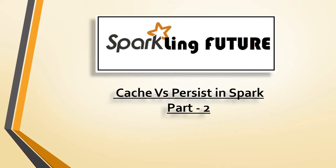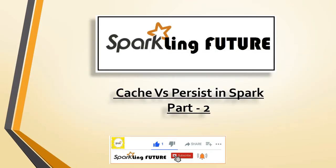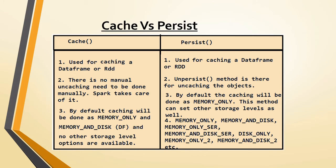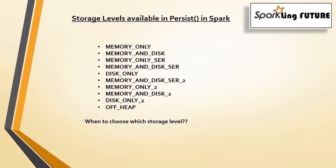Before starting with today's video I request all of you to subscribe to my channel. Please like, share, comment and click on the bell icon for the notifications. In the previous video we discussed about the differences of cache and persist methods and how to use them in Scala code. Today we will see what are the various storage levels available in Spark, what is the meaning of each, and when to choose which storage level.